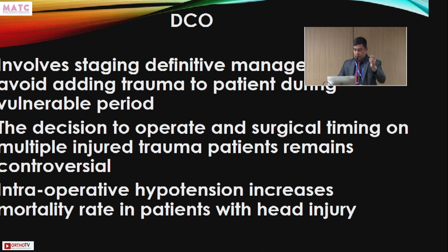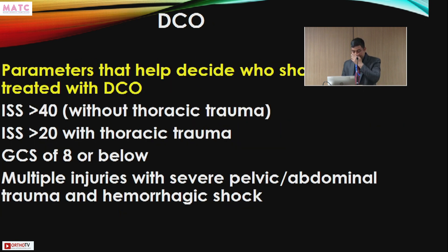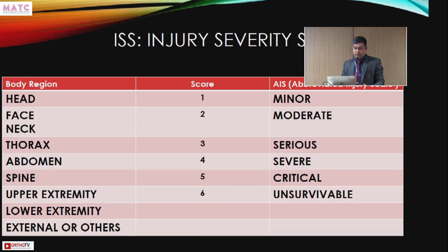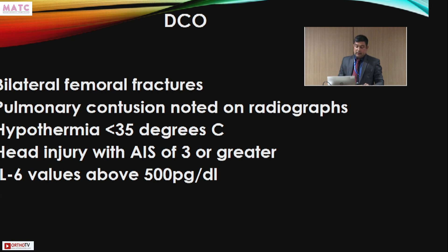Parameters to decide DCO include: ISS greater than 40 without thoracic trauma, or greater than 20 with thoracic trauma; GCS of 8 or below; multiple injuries with severe pelvic or abdominal trauma and hemorrhagic shock; bilateral femoral fractures; pulmonary contusion visible on radiograph; and associated injuries requiring assessment.